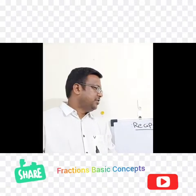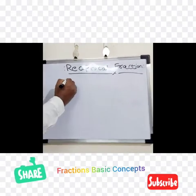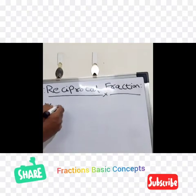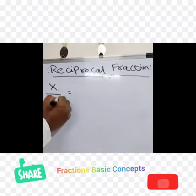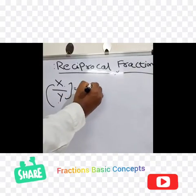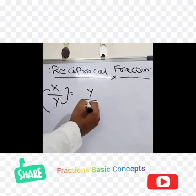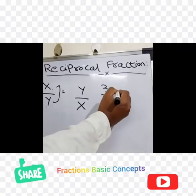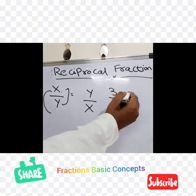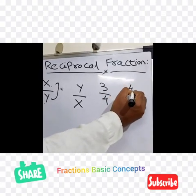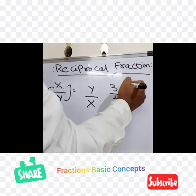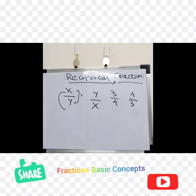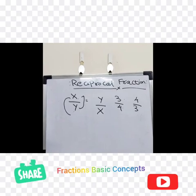Now we will discuss the reciprocal of a fraction. For a fraction x by y, where x is the numerator and y is the denominator, the reciprocal is obtained by interchanging the numerator and denominator — that is, both are exchanged. For example, for the fraction 3 by 4, the reciprocal is 4 by 3, because the denominator 4 comes up as numerator and the numerator 3 becomes the denominator. These concepts are basics, but they will be helpful for many competitive exams. Thank you.